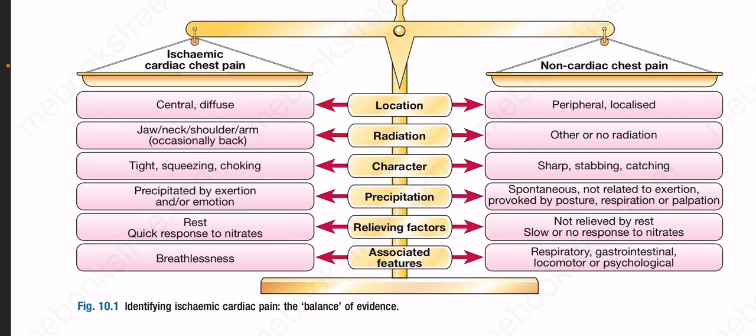Non-cardiac chest pain: location is peripheral or localized; radiation is other or no radiation; character is sharp, stabbing, catching; precipitation is spontaneous, not related to exertion, provoked by posture, respiration or palpation; not relieved by rest; slow or no response to nitrates. Associated features include respiratory, gastrointestinal, locomotor or psychological.